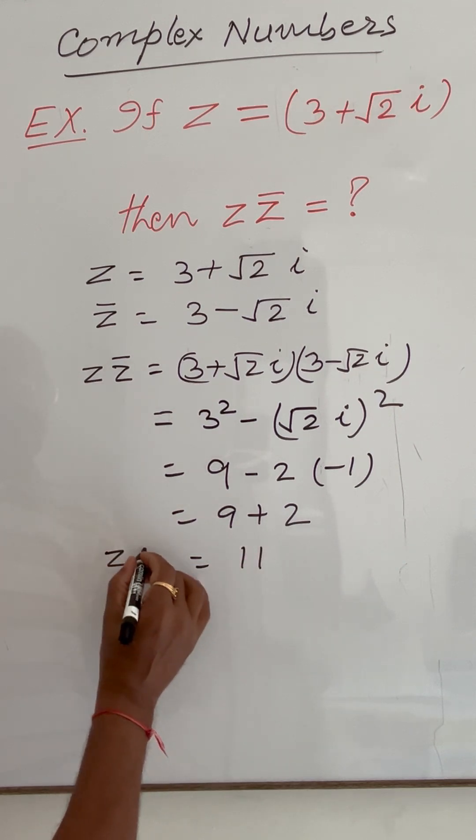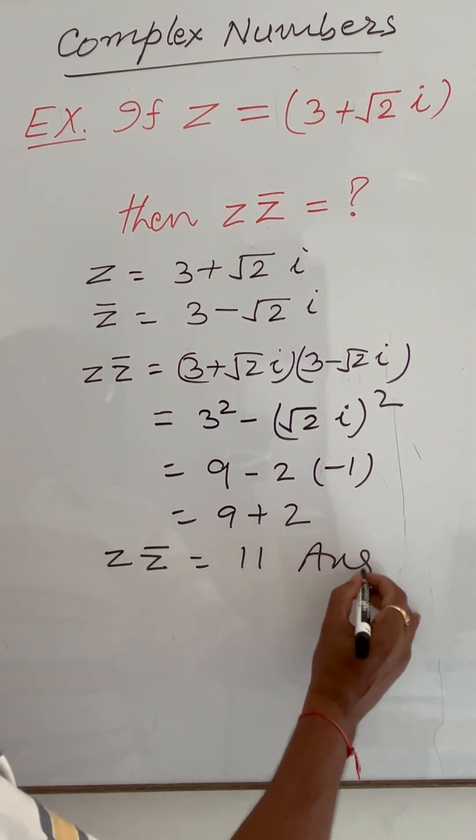So we are getting Z·Z̄ = 11. This is the answer.